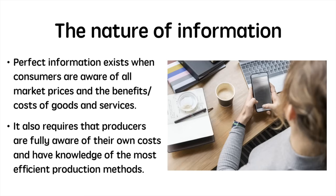When considering the nature of information, we have to think about consumers and firms and their access to market knowledge. Perfect information exists when consumers are aware of all market prices and the benefits and costs of goods and services. This tends to be simpler for basic goods such as water and milk, but far more complicated when discussing significant decisions such as choosing a university to attend.